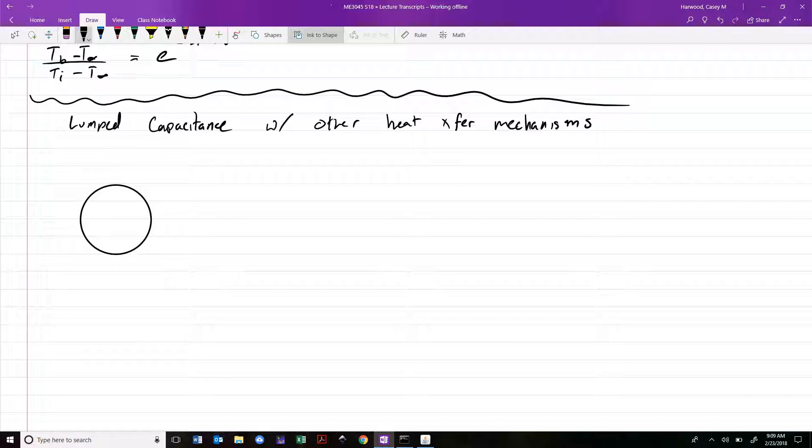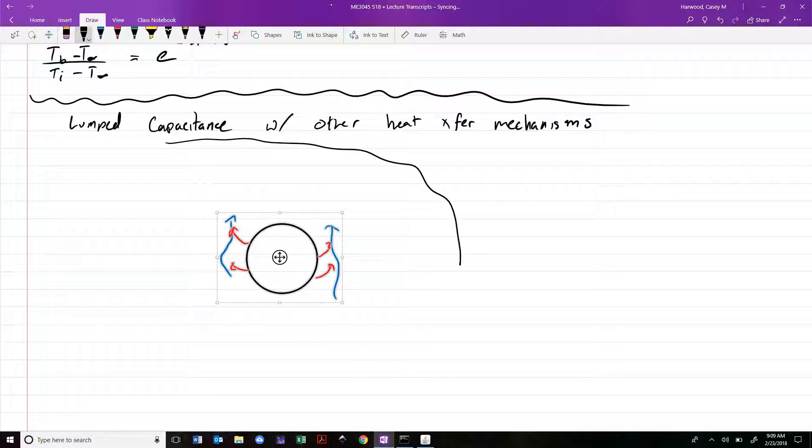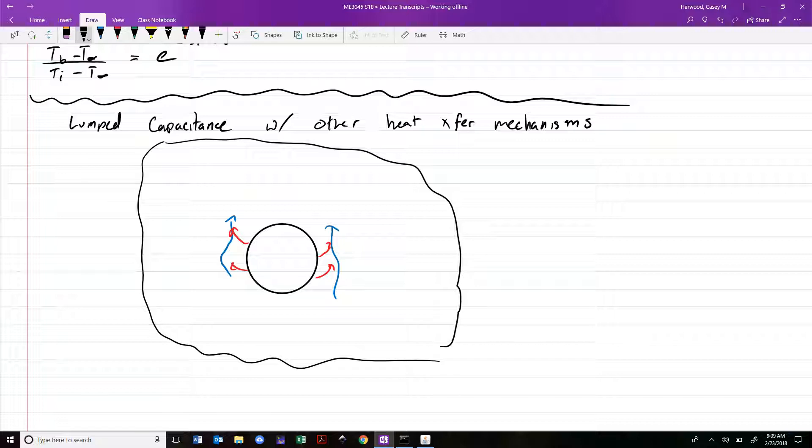We covered before there's going to be convective cooling to the air surrounding. Let's assume there's some sort of natural airflow around the object, which is going to cause some heat transfer by convection to the surrounding air. But what if this cooling chamber surrounding the object is this very large surrounding space?